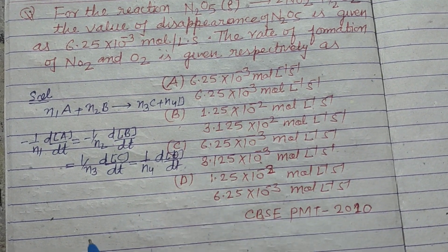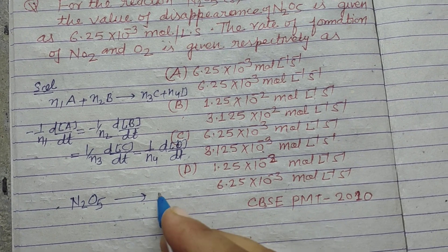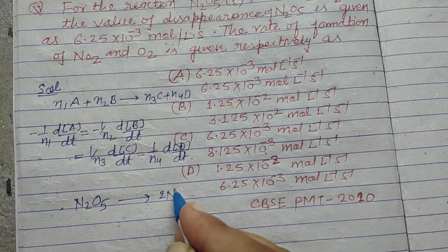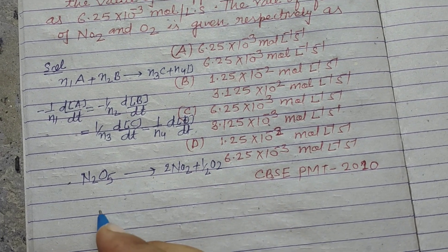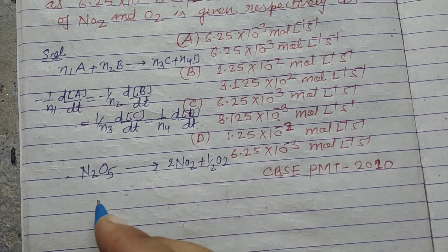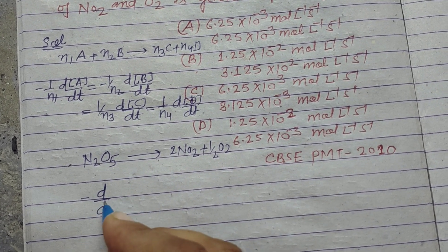So using this, the given reaction is N2O5 gives rise to NO2 plus half O2. So the rate of reaction -d[N2O5]/dt